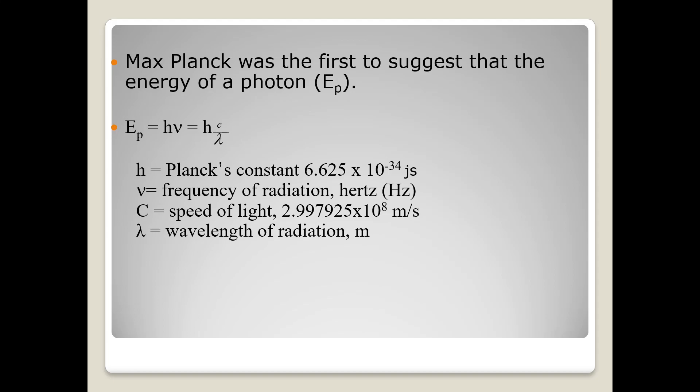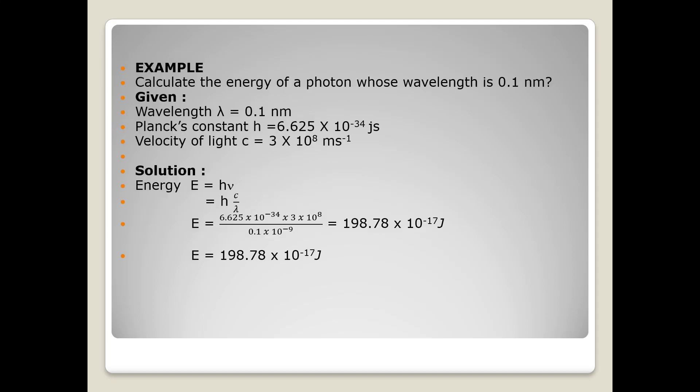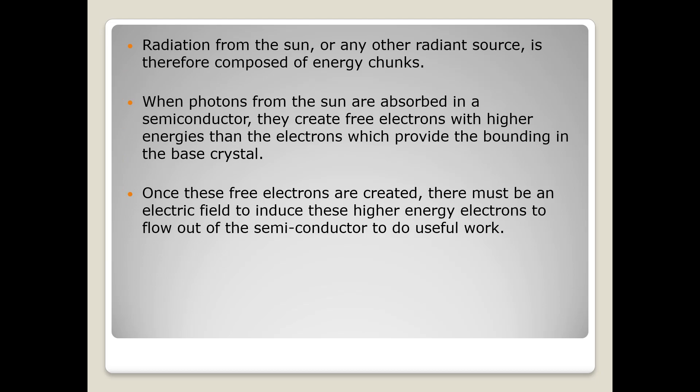The value of h is Planck's constant, 6.625 × 10^-34 joule second. ν is frequency of radiation expressed in hertz, c is speed of light 3 × 10^8 meter per second, and λ is the wavelength of radiation expressed in meter. So based on the formula we can solve a problem by substituting the given data to find out the energy of a photon.